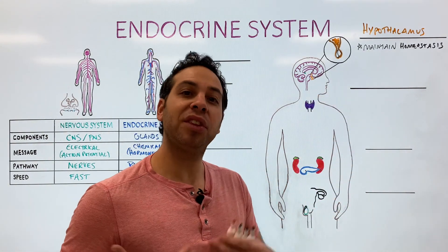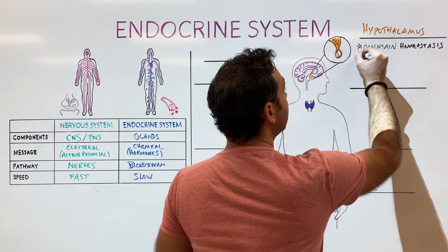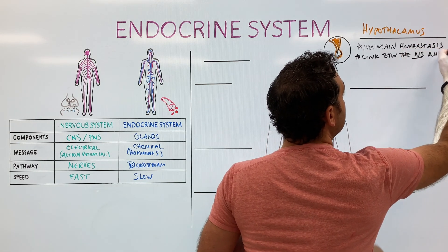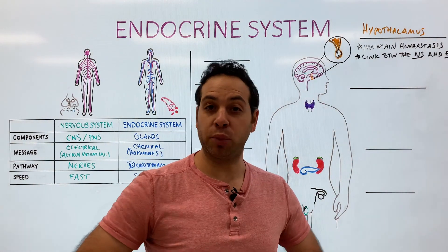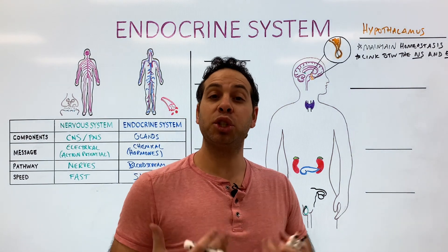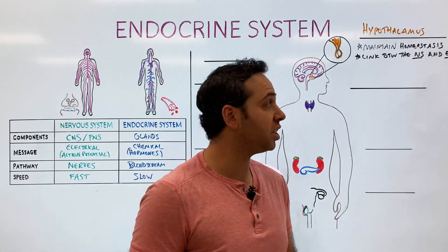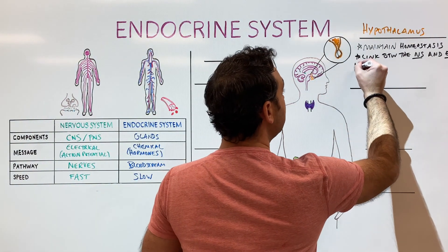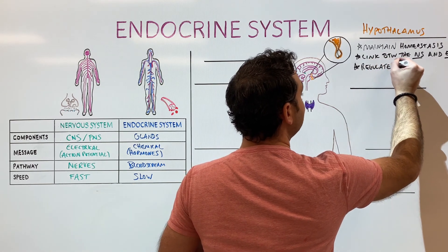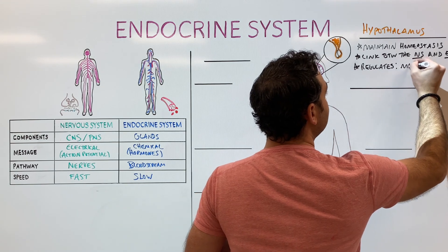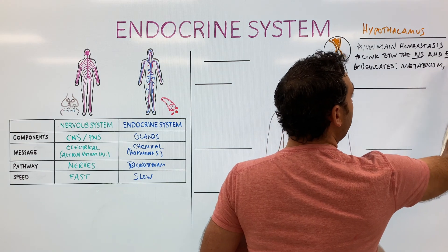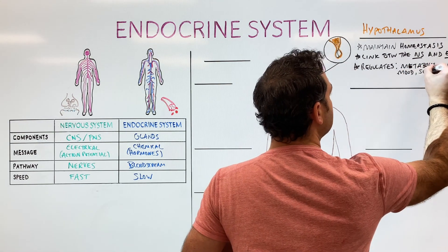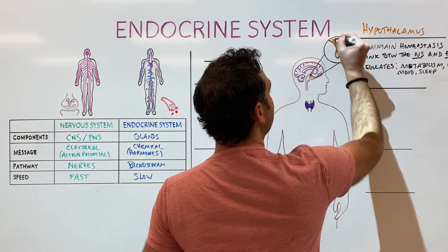What's also cool about the hypothalamus is that it's the link between the endocrine system and the nervous system. It receives electrical signals from throughout the body — from organs like the heart and liver — and it also controls the autonomic nervous system, a subdivision of the peripheral nervous system, while communicating with other glands to secrete hormones. In terms of what it regulates, it helps control things like metabolism, growth — going through puberty or having muscles grow — as well as mood and sleep.